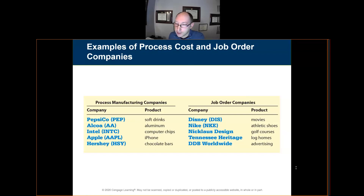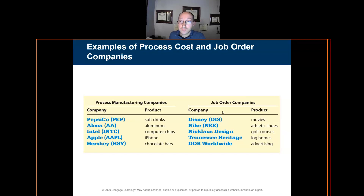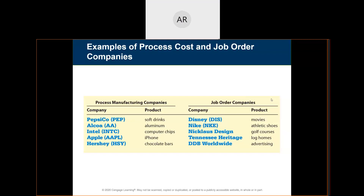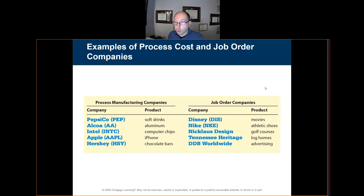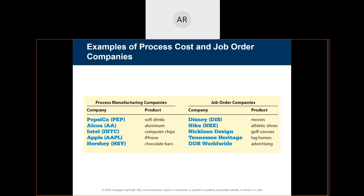Student question: if we as consumers order a product from Amazon, would that be a job in the eyes of an Amazon worker? Yes, absolutely — it's a one-off type of situation. Even if a million people order the same product, it's still considered a job because they're not continually making that product to be widely available; they're making it based on a certain quantity for a specific amount of time.